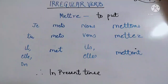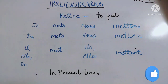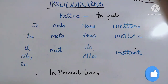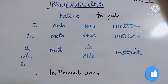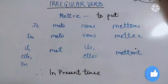The first verb is 'mettre', which means 'to put'. We are going to discuss this irregular verb in present tense. Let's do the conjugation of 'mettre'. First, remove the infinitive part — we are left with the stem. The infinitive part is R-E, and we are left with M-E double T.